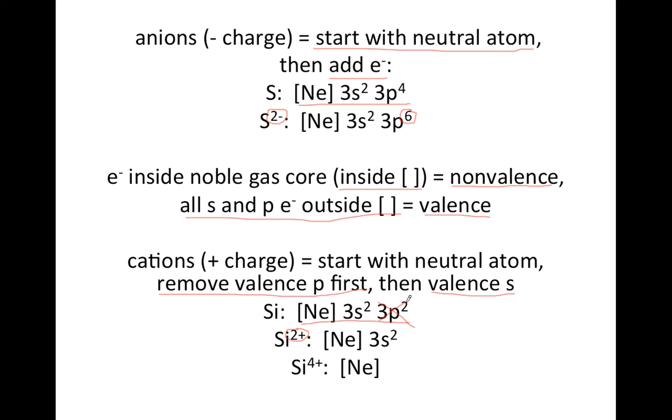And up here we said remove the valence P first, so you're going to get rid of these two first. So that would leave you [Ne] 3s².